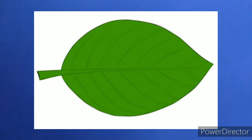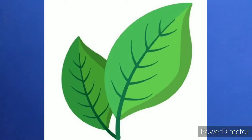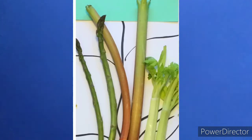The leaves are generally green in colour. All trees and plants have green leaves. Yes. But the colour of the stem is green, and some have brownish, grey, or brown colour.